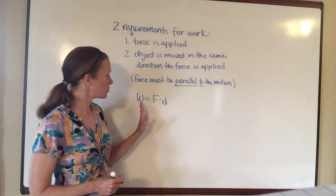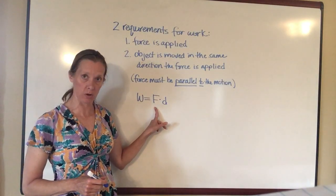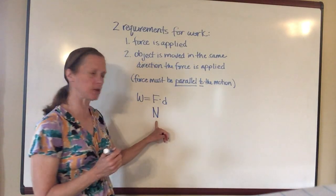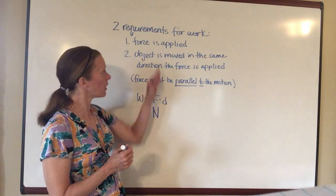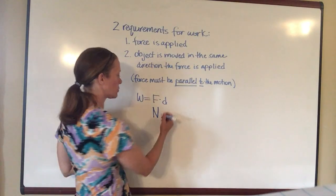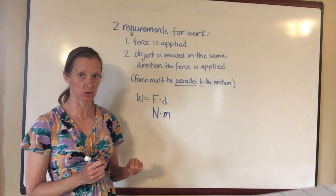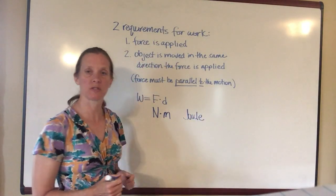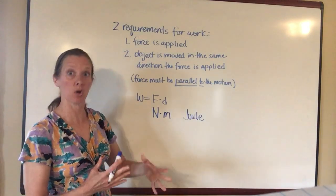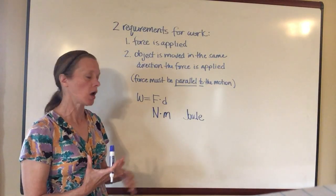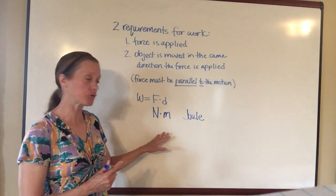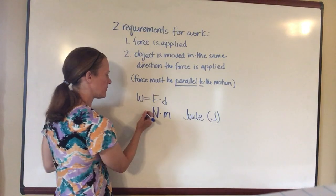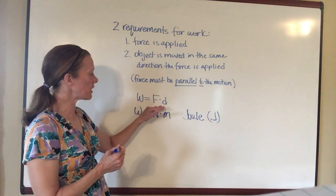To calculate work, we know the unit of force is the newton. The force has to move an object some distance, and that distance is always in meters. When you multiply newtons times meters, you get a unit called the joule, abbreviated with a capital J, named after James Prescott Joule who did a lot of the research on this topic. So the formula for work is simply force multiplied by distance.